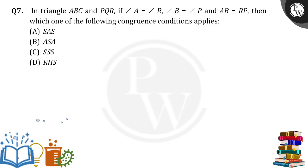Hello everyone. In triangle ABC and PQR, if angle A is equal to angle R, angle B is equal to angle P, and AB is equal to RP, then which of the following congruency criterions apply? Okay, let's see. First of all, draw the two diagrams. So the triangles are there.